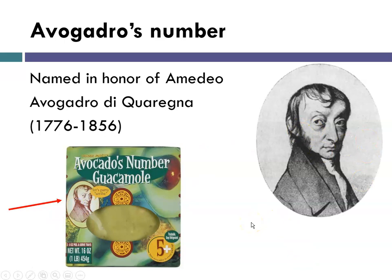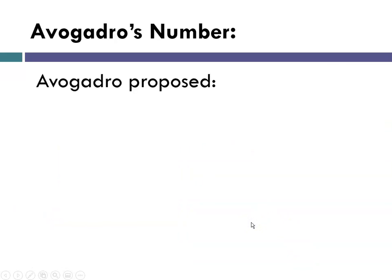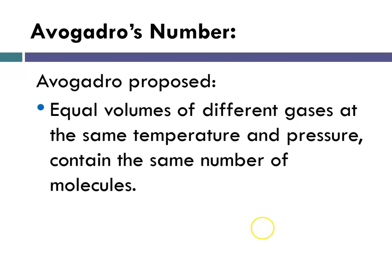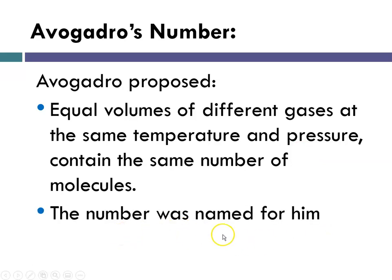So why is it named after Avogadro? Well, it turns out that Avogadro did a lot of experiments with gases. And he proposed that if you have equal volumes of different gases, as long as they're at the same temperature and pressure, they contain the same number of molecules or atoms. And again, the number was named for him. He did not calculate it. It was many years until that happened. But the number was named in honor of him because of Avogadro's law. Avogadro's law states that equal volumes of gases at the same temperature and pressure contain the same number of particles.